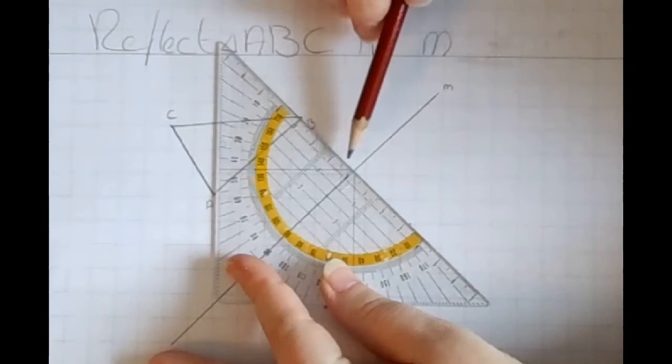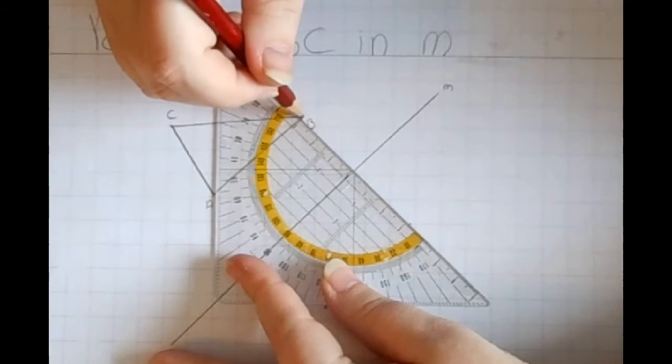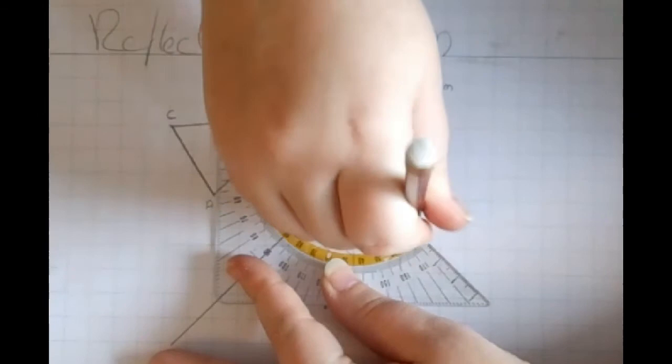And then we are going to again see how far B is from the mirror line. I am going to check it and make sure I get the same distance on the other side of it. Put a point right there.